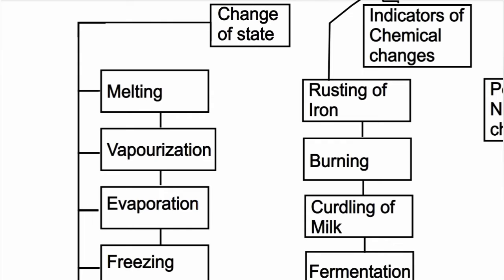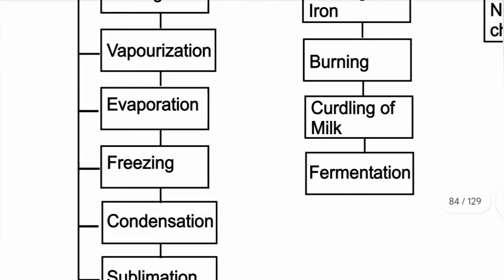Then freezing: freezing is when a liquid becomes solid — it freezes. Then condensation: condensation is when a gas changes to a liquid state. This process is one of the physical changes. When heat is applied, liquid becomes gas; when cooled, gas returns to liquid state. Evaporation is liquid to gas with heat; condensation is the opposite — that is the difference.